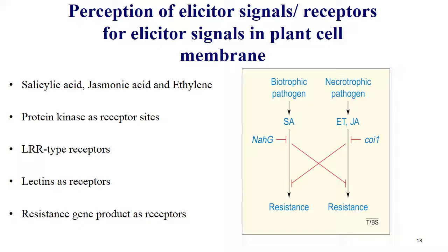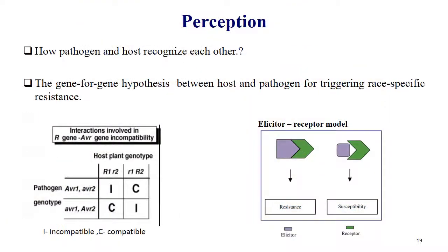In necrotrophic pathogens, jasmonic acid and ethylene are the elicitor signals leading to resistant response. In the perception step, the gene-for-gene hypothesis governs race-specific resistance. In the elicitor-receptor model, the elicitor and receptor interaction is like a lock-and-key model of enzyme interaction. When elicitor and receptor recognize each other, that gives the resistant mechanism. When they cannot recognize each other, that may lead to susceptibility.